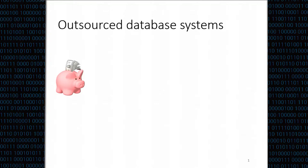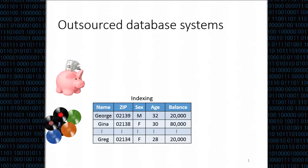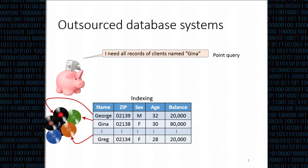Imagine we have a bank that keeps records of its clients. In order to efficiently query and retrieve client records, the bank uses an index, which looks like a table of attributes. If we want to get all records for clients named Gina, we go to the index at the name attribute, find Gina, and follow the pointer to retrieve those records.